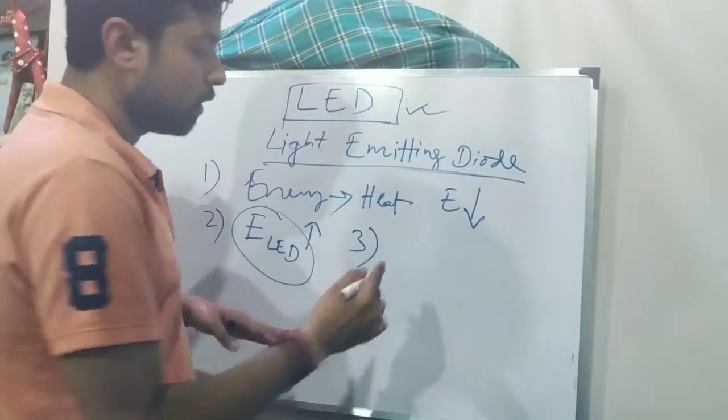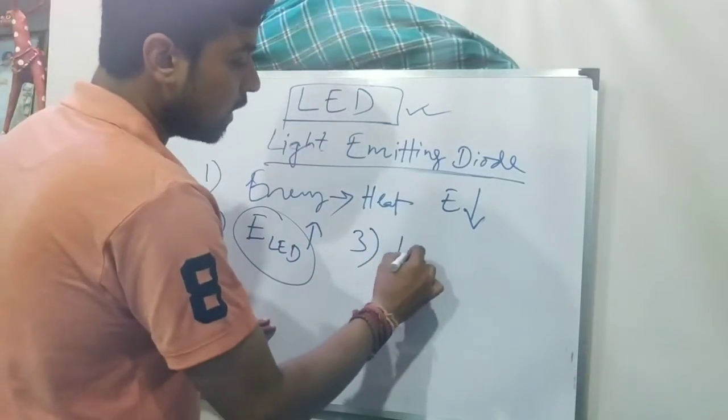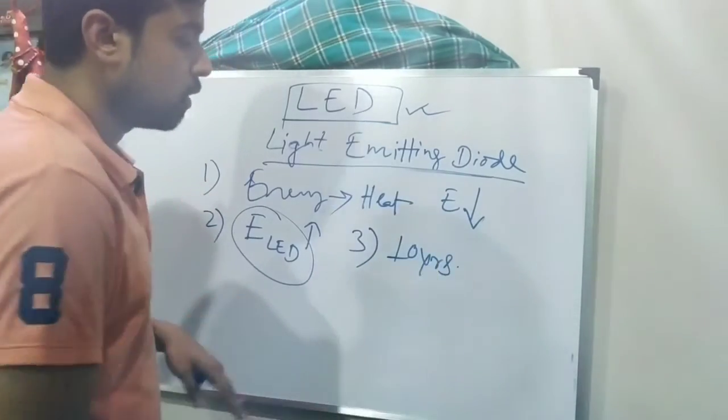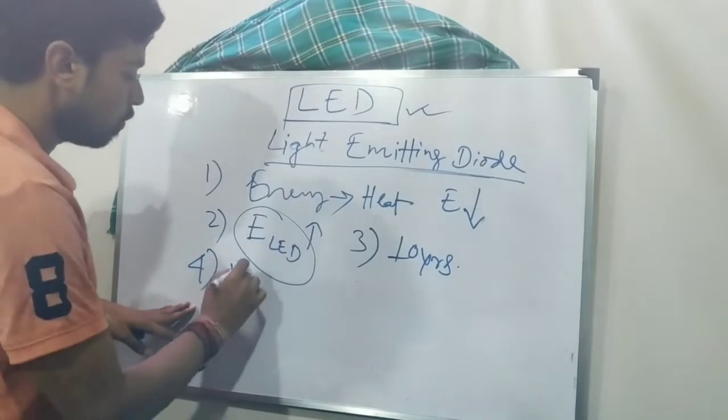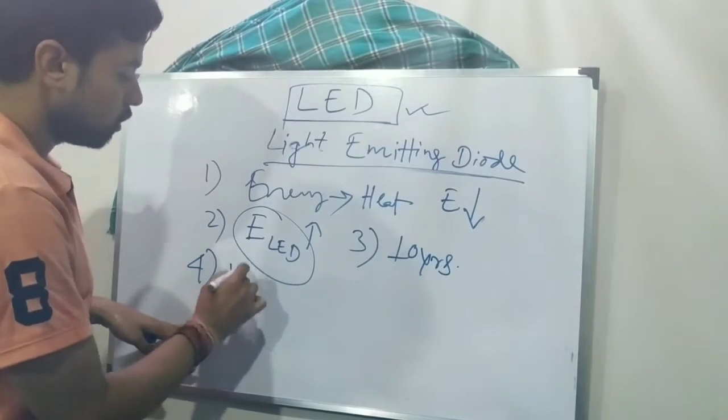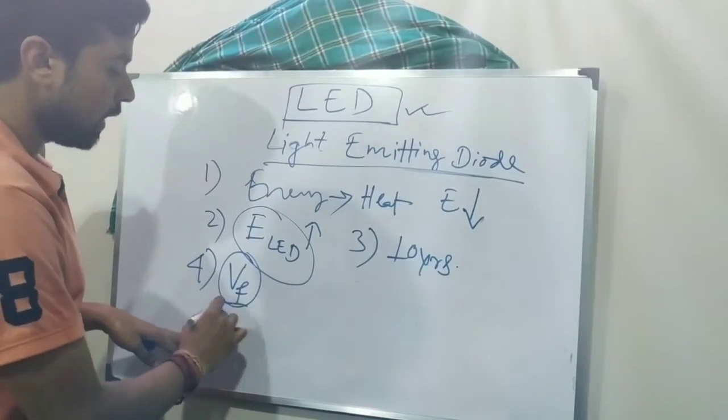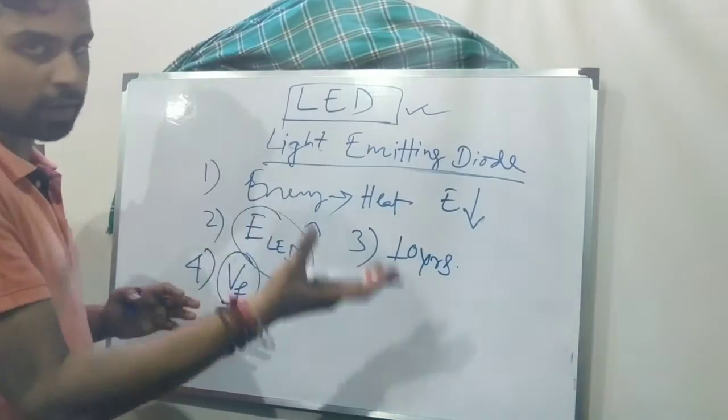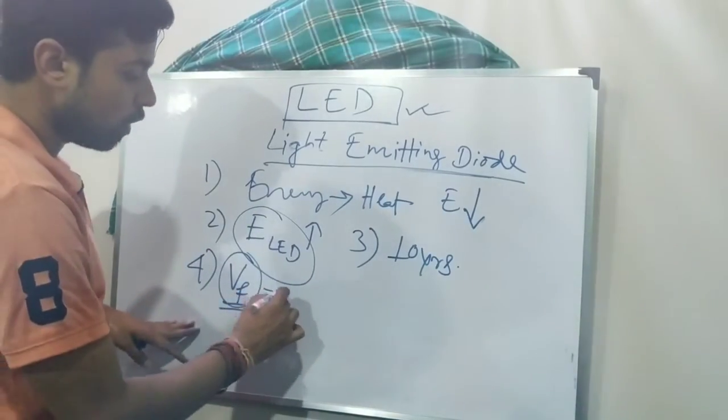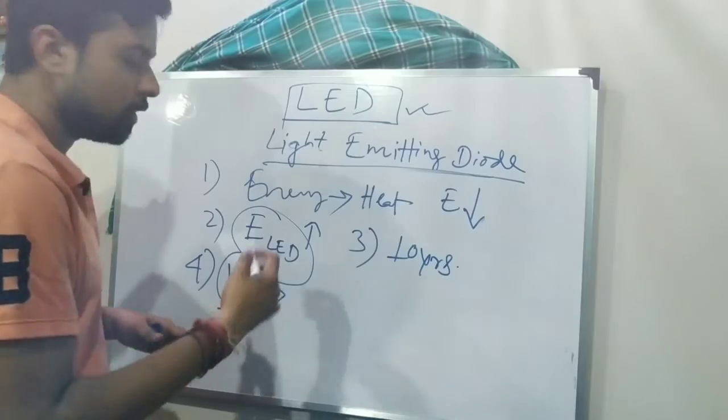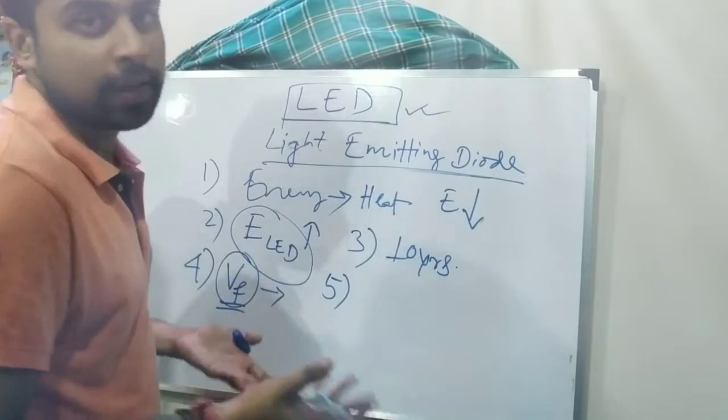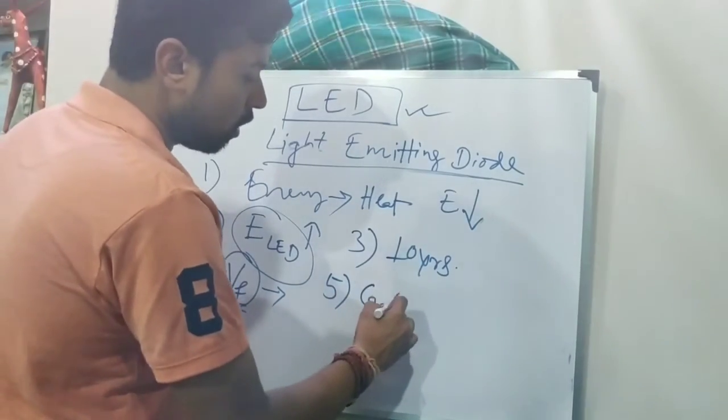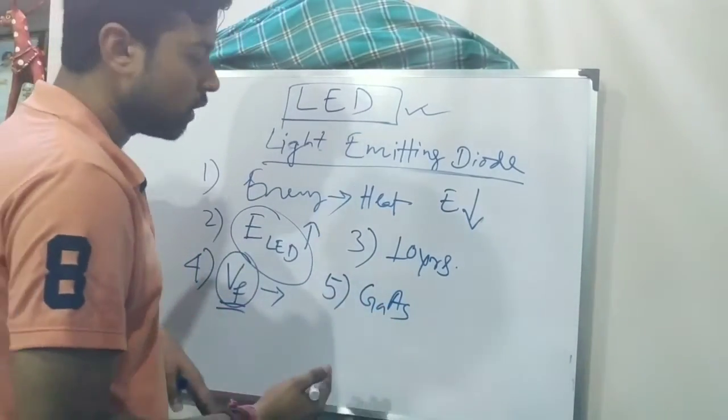What is the third point? It is the durability. So it can last up to 10 years at a single run. And the fourth point that is very useful, the forward voltage plays the important role. Unless the threshold voltage matches for an LED, it is not capable of generating the light. And it is made of a combination of two semiconducting materials such as gallium arsenide.